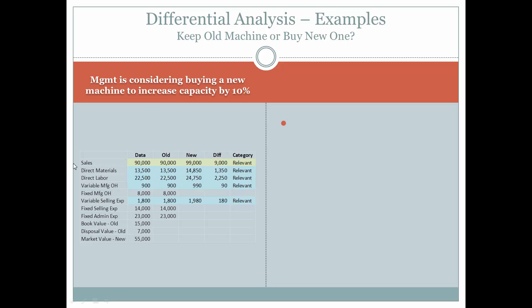Direct materials, direct labor, variable manufacturing overhead, and variable selling expenses would all be relevant because they will all change — they will all increase as a function of sales increasing by $9,000, or 10%. Fixed manufacturing overhead would be irrelevant; it would not change whether you get the new machine or keep the old one. Fixed selling and administrative expenses are also irrelevant — they would stay the same.